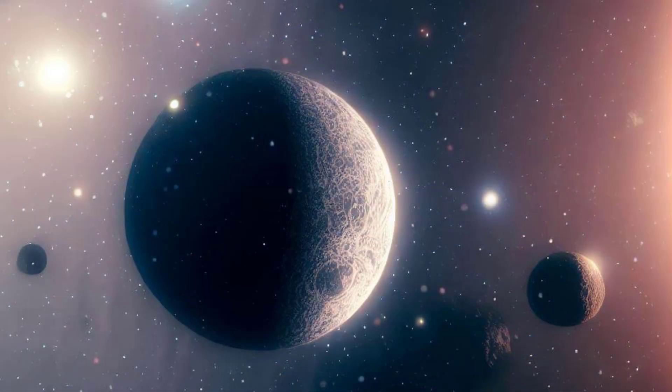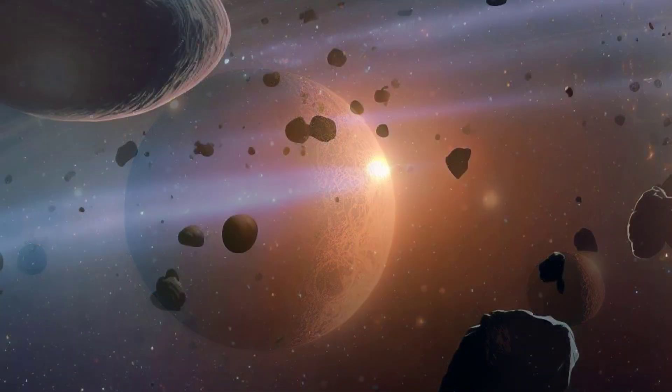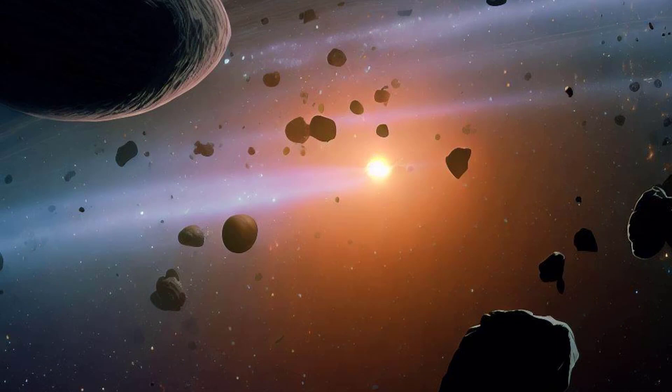Our solar system also hosts numerous minor planets, such as Pluto, classified as a dwarf planet. The asteroid belt, situated between Mars and Jupiter, harbors countless rocky fragments called asteroids. These remnants offer insights into the early stages of our solar system's formation.